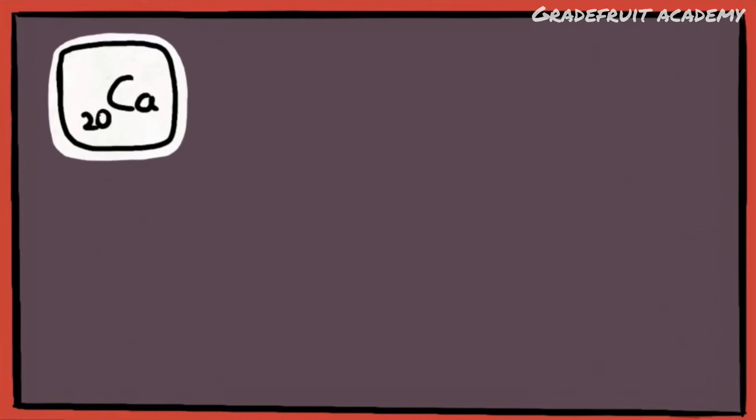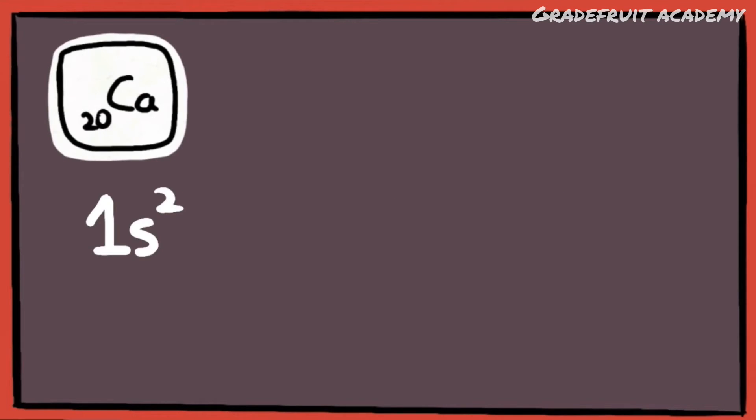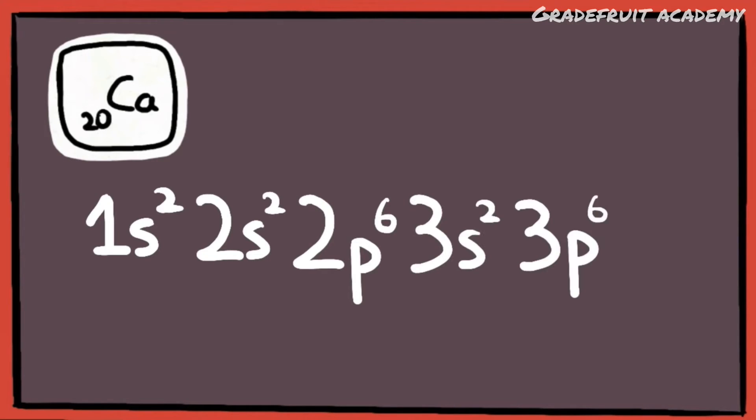For a calcium atom with 20 electrons, let's let our memory flow by writing out 1s², 2s², 2p⁶, 3s², 3p⁶. As of now, we've filled up a total of 18 electrons, which gives us 2 electrons left to write. So we just add on 4s².